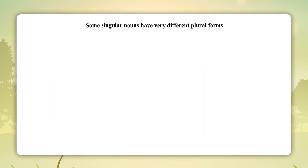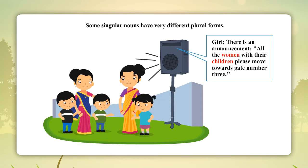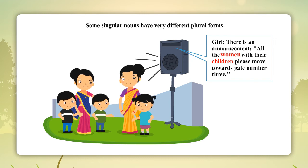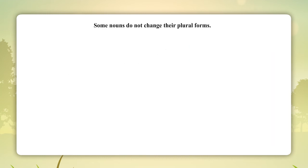Some singular nouns have very different plural forms. Girl: 'There is an announcement. All the women with their children, please move towards gate number 3.'